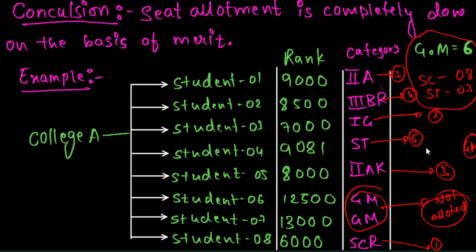Suppose the rank is 16th — in that case, if they don't get a general merit seat, they will move to their respective category. For example, SC has 8 seats. But general merit is allotted first, and then the next college option is considered.